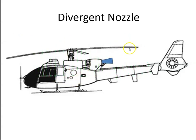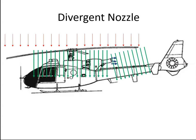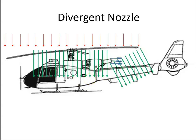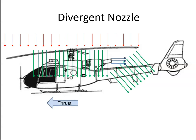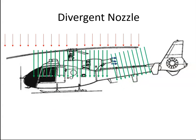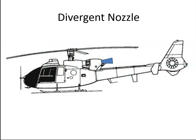By reducing that velocity out the back, we would use a divergent type nozzle. So we want to reduce the velocity, and we can do that with a divergent type nozzle.